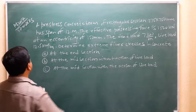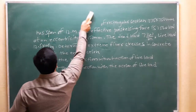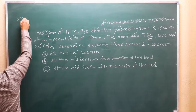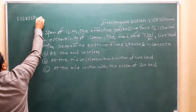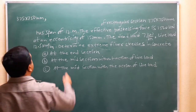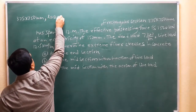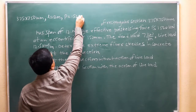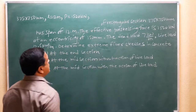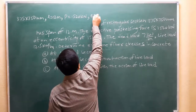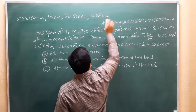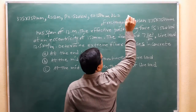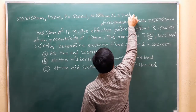First I will write down all the given data. The dimensions are 375 by 750 mm. Span of beam is 12 meters. Effective pre-stressing force is 1520 kN. The eccentricity is 150 mm. Dead load is 7 kN per meter.